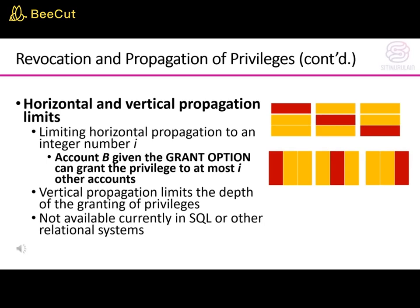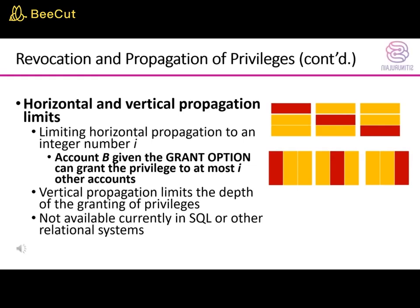The GRANT OPTION can grant the privilege to at most I other accounts. Vertical propagation is more complicated — it limits the depth of the granting of privileges. Granting a privilege with a vertical propagation of 0 is equivalent to granting the privilege with no GRANT OPTION. If a grantor grants a privilege to account B with vertical propagation set to integer j > 0, then B has the GRANT OPTION on that privilege but can only grant it to other accounts with vertical propagation less than I. Note that horizontal and vertical propagation limits are not currently available in SQL or other relational systems.